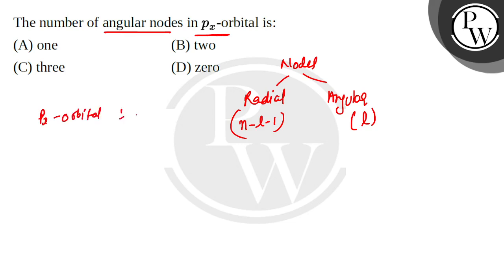For p orbital, l equals 1, so the angular node is one. So option A is correct, and the rest is incorrect.